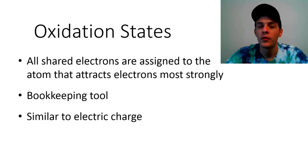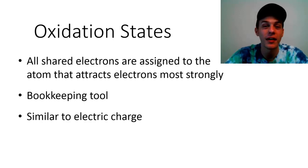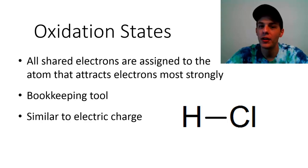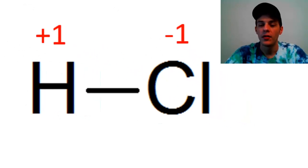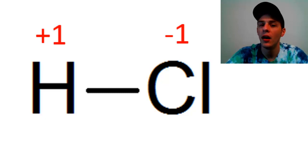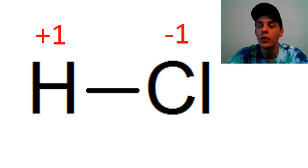Oxidation states are sort of similar to an electric charge. If chlorine would have gained an electron it would have acquired a negative one charge, and since chlorine was hogging up more of the electrons it's as if chlorine gained an electron, so it has a minus one oxidation state. In HCl we treat hydrogen like it's lost an entire electron, giving it an oxidation state of +1, and chlorine an oxidation state of −1. Note the convention: for oxidation states we put the plus or minus sign to the left of the value, which is different from electric charge notation where the sign goes to the right of the number.